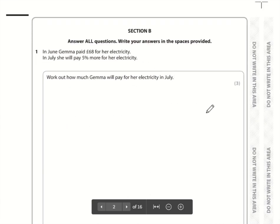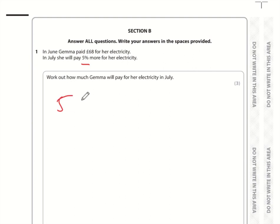Okay, so we've been told that in July, Gemma is going to pay 5% more for electricity. So if you're working out 5% of an amount, hopefully you would know to use the multiplier 0.05. This multiplier here is the decimal equivalent of 5%, this number divided by 100.